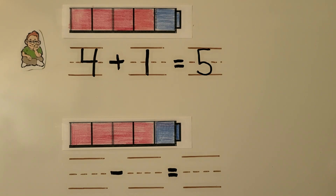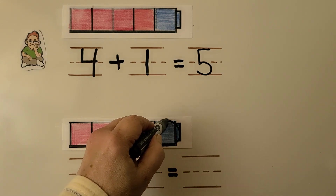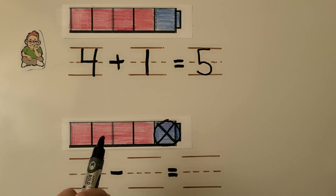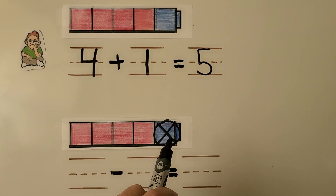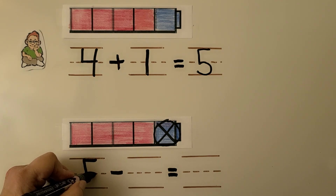Bill gives back the blue cube. So how many cubes does Bill have now? We can cross out one blue cube that he had to show that he gave it back. We can write a subtraction sentence with a minus and an is-equal-to symbol. There are one, two, three, four, five in all. So the number in all goes over here because we're doing subtraction with a minus.